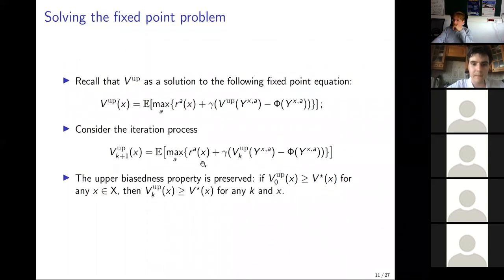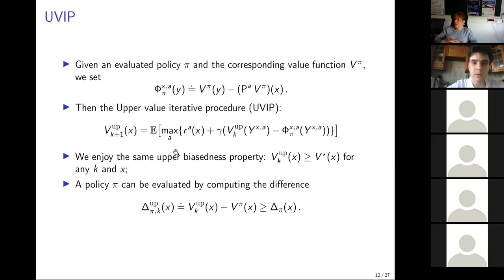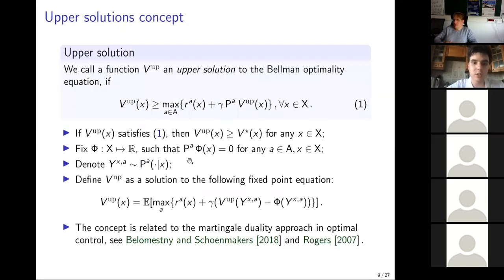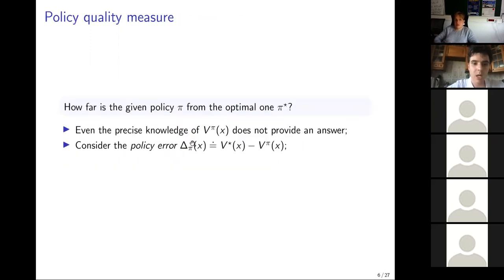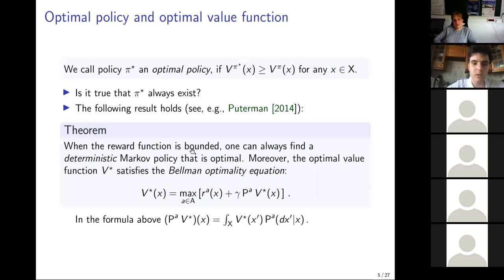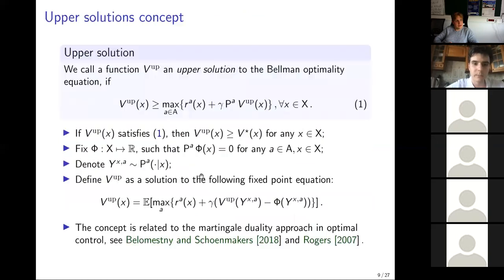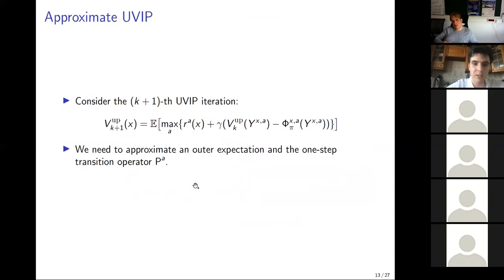— В какой норме оценка больше? — В бесконечной норме на пространстве x. — То есть всё ограничено в этой постановке? — Да, всё ограничено: если награды ограничены и дискаунт gamma, то V* меньше, чем верхняя граница наград делить на (1 − gamma). То же самое и для V_P.